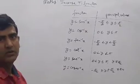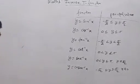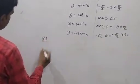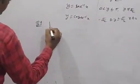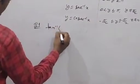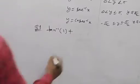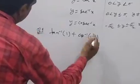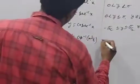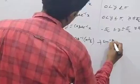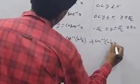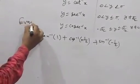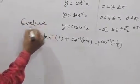With the help of these principal values, we can solve the maximum questions of this chapter. Okay, I am going to give an example. Suppose question number 1: evaluate tan inverse 1 plus cos inverse of minus 1 by 2 plus sin inverse of minus 1 by 2.